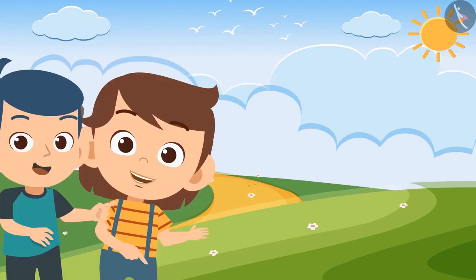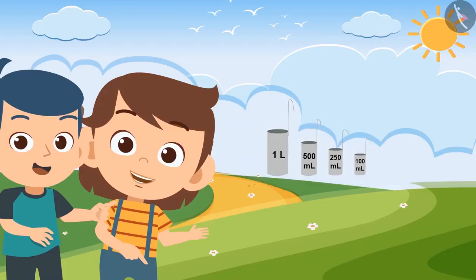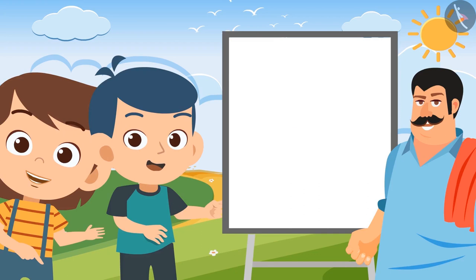Look, Bholu, the milkman has 4 vessels. The largest one is of 1 litre, then 500 ml, then 250 ml, and then the smallest one is of 100 ml. Brother, which vessel will you use to give 4 and a half litres of milk?